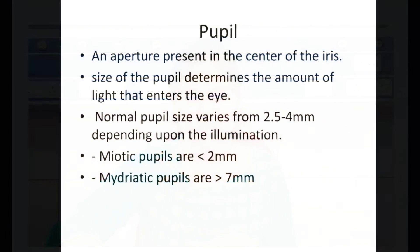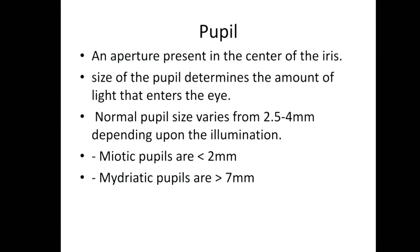Before going into the details of the light reflex, let us go through some basic concepts about the pupil. The pupil is an aperture present in the center of the iris, and the size of the pupil determines the amount of light which enters the eye. The normal size of the pupil varies from 2.5 to 4 mm depending upon the illumination in which the size is being checked.